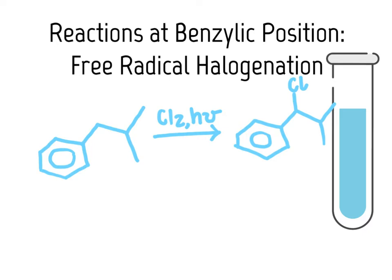In the free radical halogenation reaction, the benzylic position is particularly prone to forming free radicals — more so than the tertiary carbon or any other carbon in the molecule. We will explain why this is particularly prone to forming carbon radicals when we get into the mechanism, but this makes the benzylic position a prime site for free radical halogenation.